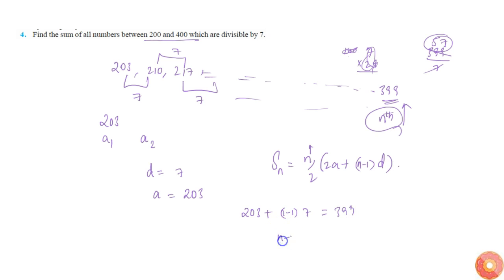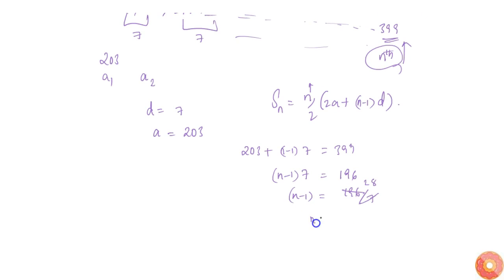That means n minus 1 into 7 equals 399 minus 203, which is 196. So n minus 1 equals 196 by 7, which is 28. Therefore n equals 29. So this is the 29th term.